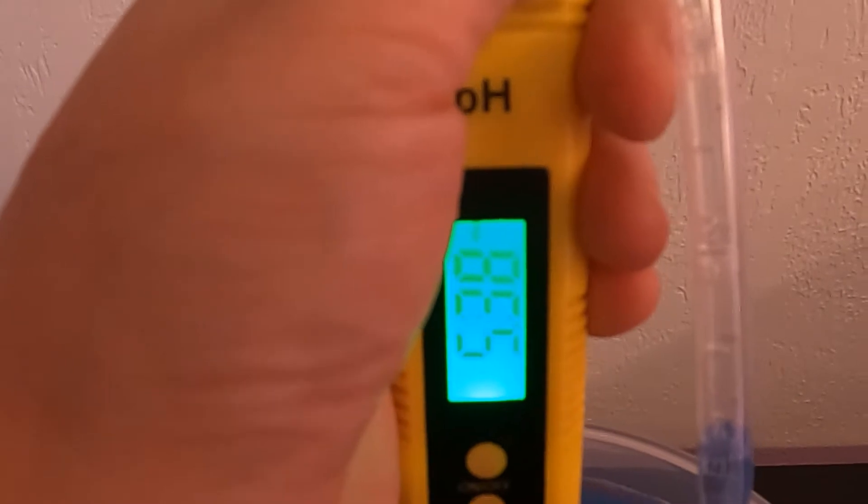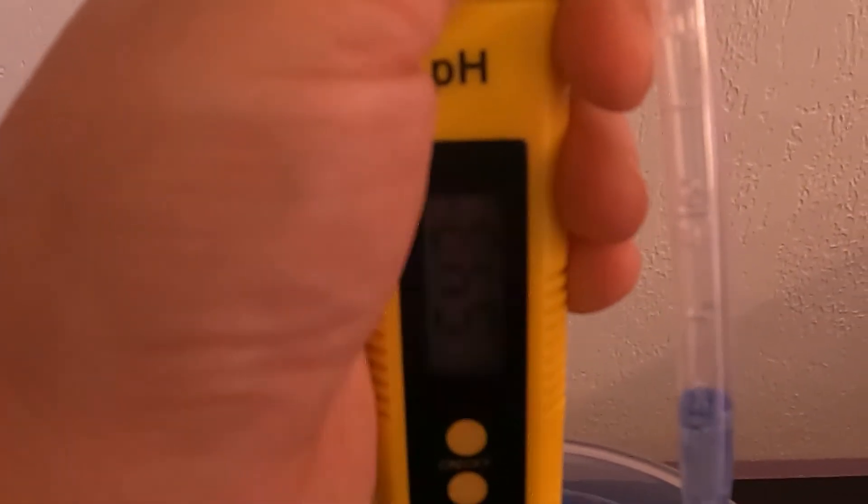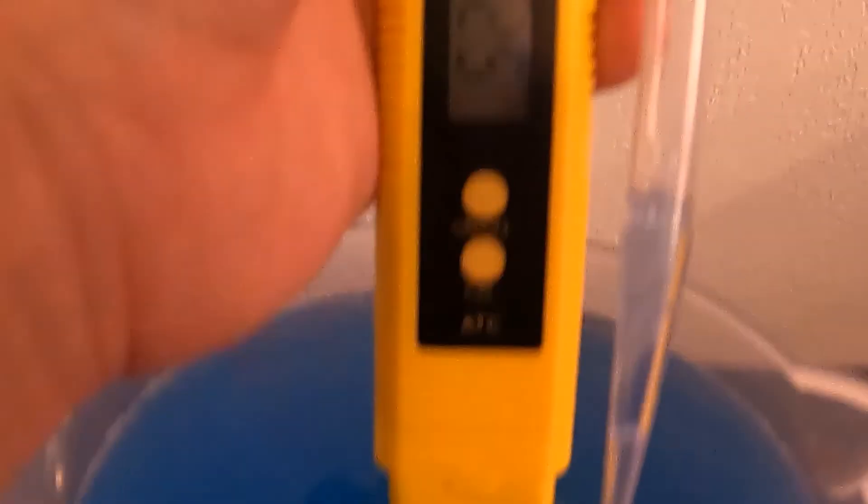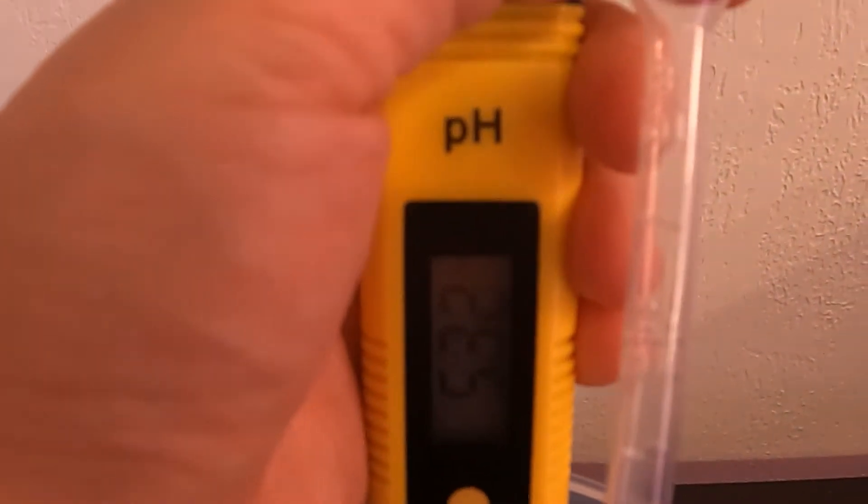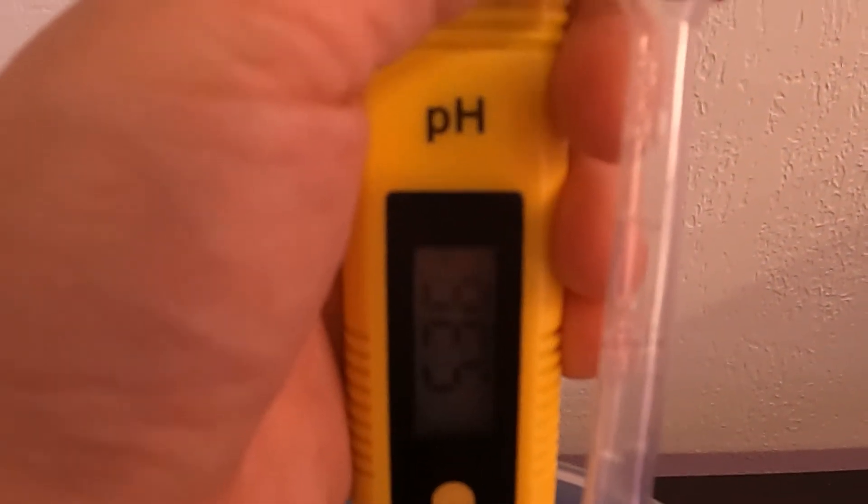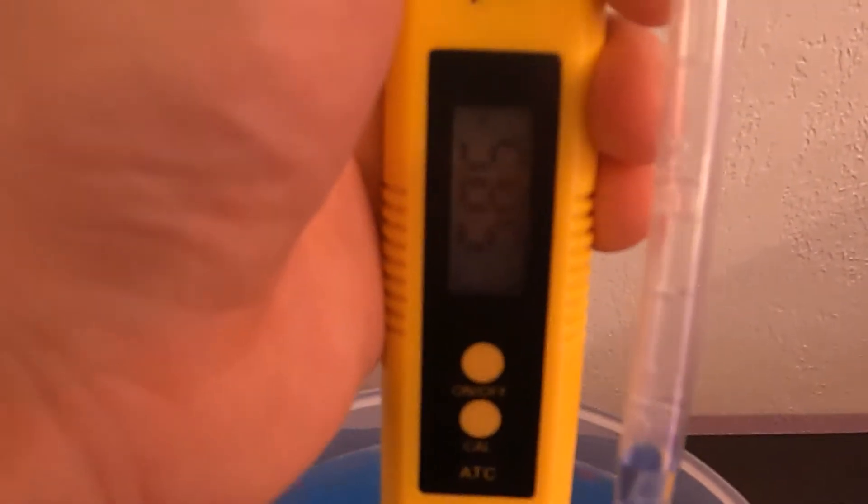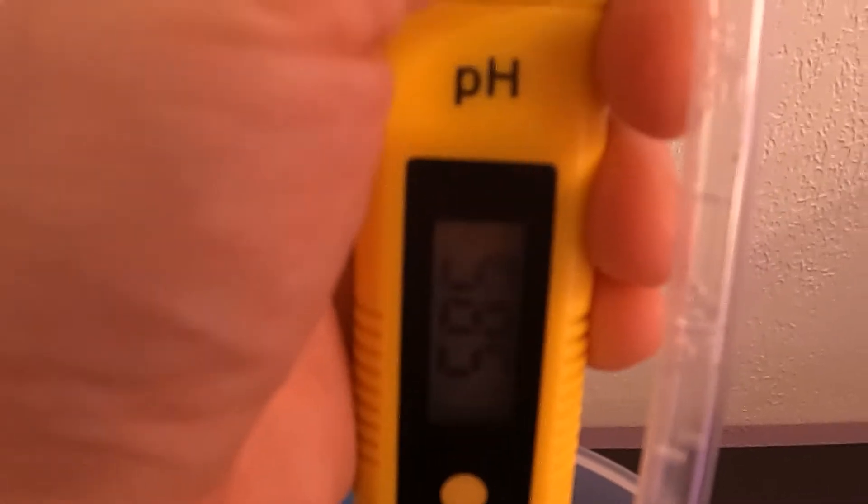You want to make sure you're adding your pH up slowly because it jumps quickly as you can see. A little drop at a time. We're currently at 5.85 and that's good enough for me. So we'll go ahead and rinse our pH meter and put it away for next time.